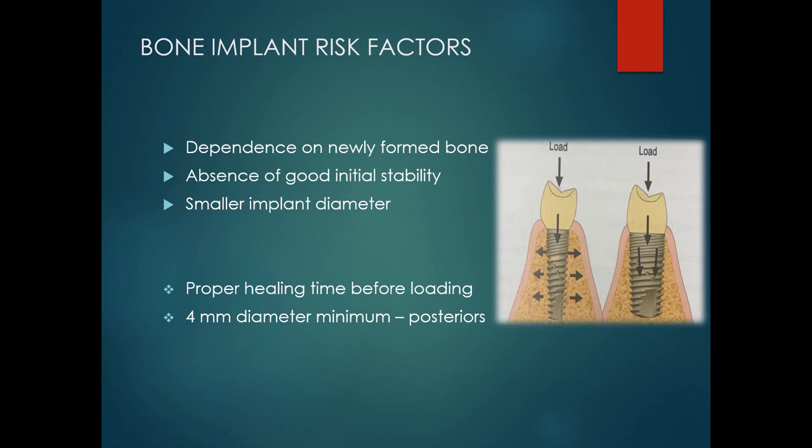Regarding absence of good initial stability: primary stability is of utmost importance and very much needed for the successful clinical outcome of implant prosthesis. We have to assess initial stability at different time points to ensure successful osseointegration. The factors that influence primary stability are bone quality, quantity, implant geometry, and the surgical technique adopted to place the implant.